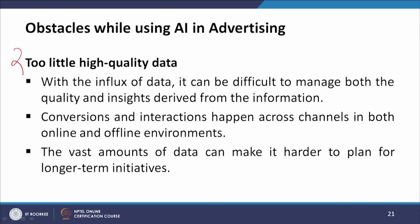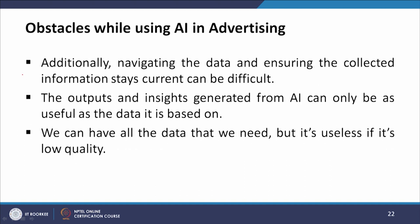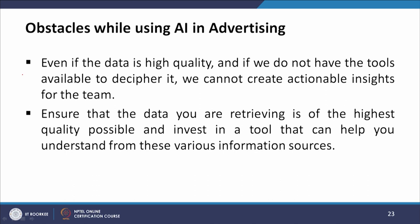The second obstacle can be too little high-quality data. With the influx of data, it can be difficult to manage both the quality and insights derived from the information. Convergence and interactions happen across channels in both online and offline environments, and vast amounts of data can make it harder to plan for longer-term initiatives. The outputs and insights generated from AI can only be as useful as the data it is based on. Even if the data is high quality but we do not have the tools to decipher it, we cannot create actionable insights. Ensure that the data you retrieve is of the highest quality possible and invest in tools that can help you understand various information sources.